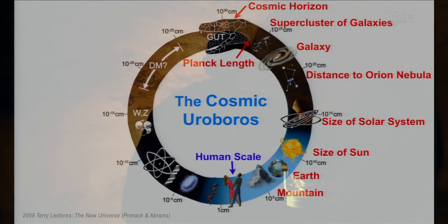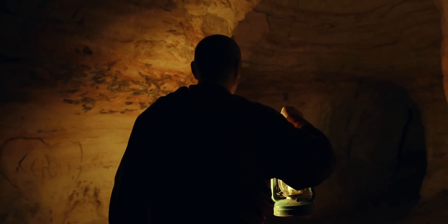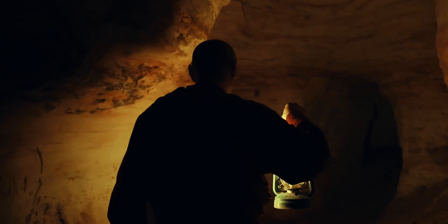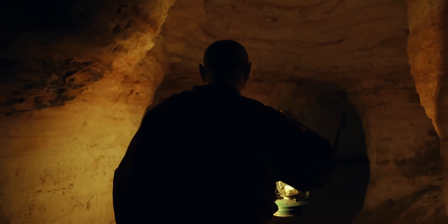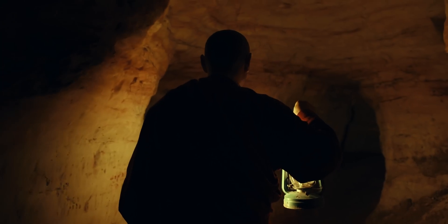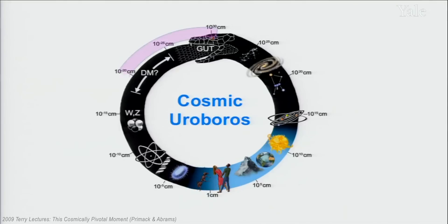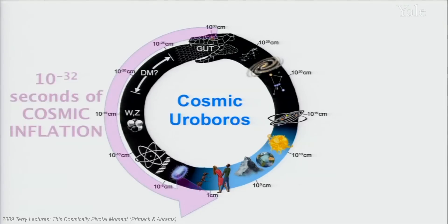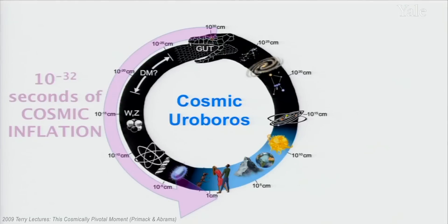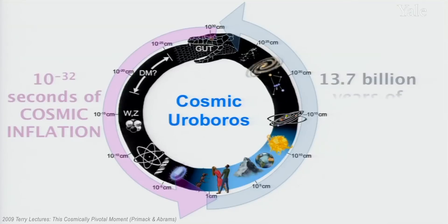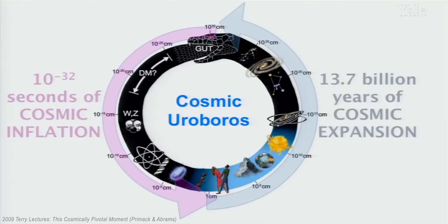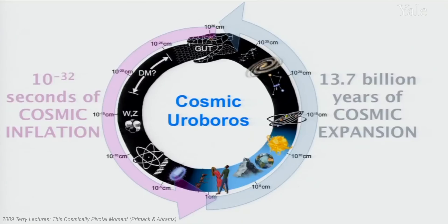In the first 10 to the minus 32 seconds of cosmic inflation, our universe expanded exponentially from about the Planck length to the size of a newborn baby. Then a phase transition occurred, the rate of expansion slowed down, and our universe grew by the same amount, in powers of 10, in the 13.7 billion years since then.